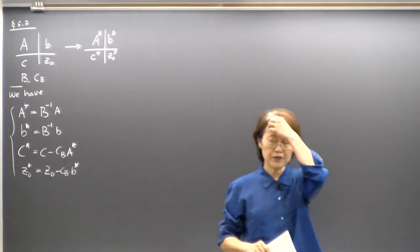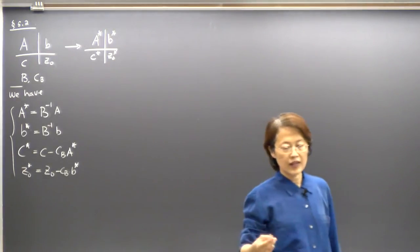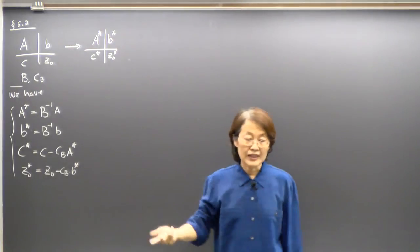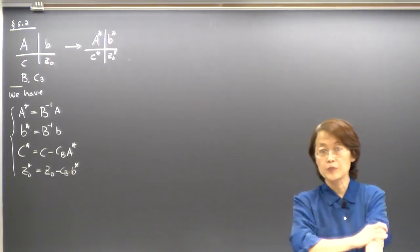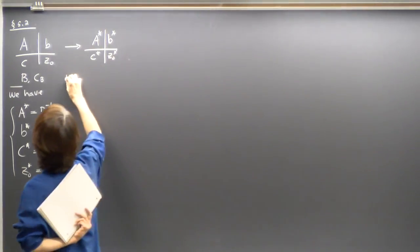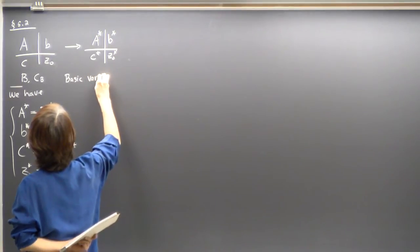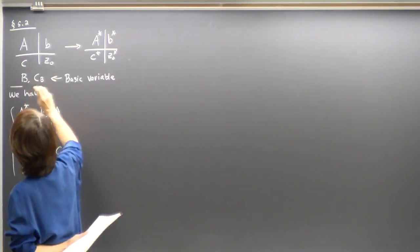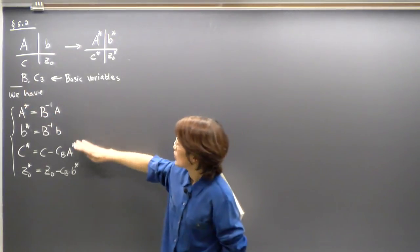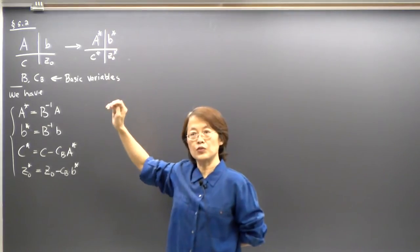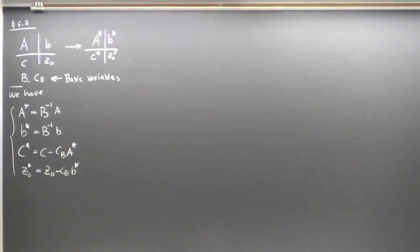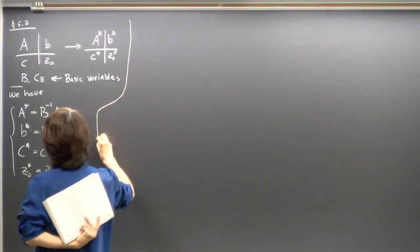I know someone looked at the homework because I got questions. I can give some hints, because those problems look like they have nothing to do with this result, but if you think one layer deeper you see the connection. They give you an LP problem and ask: can you choose x1, x3 as the basic variables in the final form? Will it be optimal? Once the basic variables are chosen, you can form B, form CB, and then you know the final form. If you know the final form, you can check if it's optimal or not.